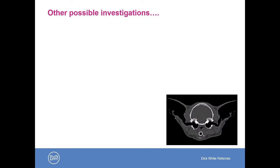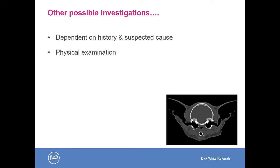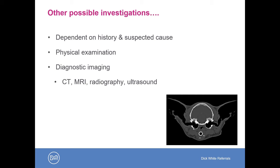Other possible investigations will depend on the history of the dog and the suspected cause. A physical examination should be performed in all patients. Diagnostic imaging may be considered in cases of neurogenic dry eye, trauma, or suspected neoplasm. Dogs with endocrinopathies are known to be at higher risk of lower tear production, so endocrinological testing might come into play. Very rarely, DNA testing can play a part in etiological diagnosis.